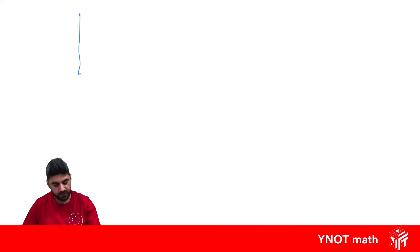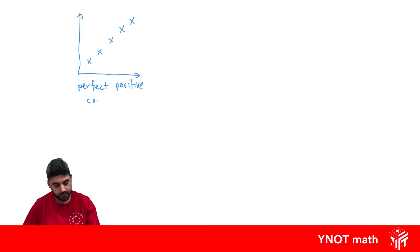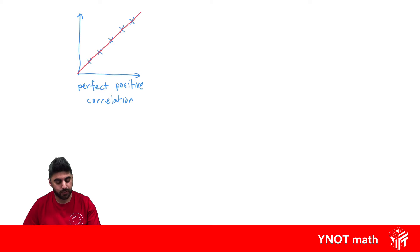If we plot a scatter plot and it looks like this, where everything lines up perfectly, we can say this is a perfect positive correlation. The reason we say it's perfect is because if we drew a line through it, it would go through every point. And the reason we say it's positive is because its gradient is positive.